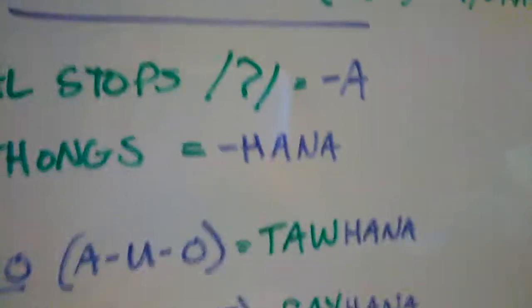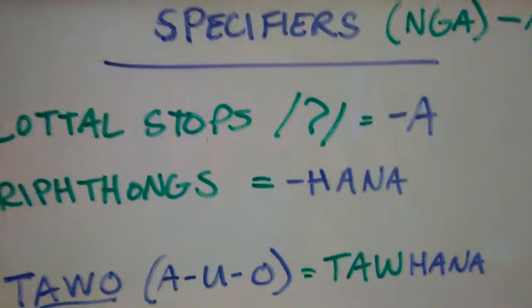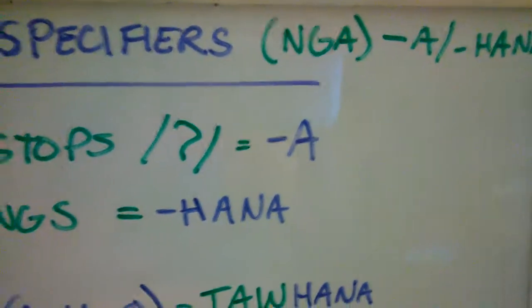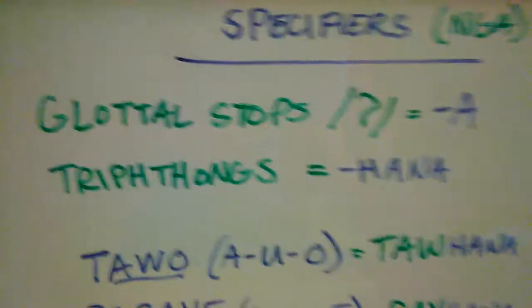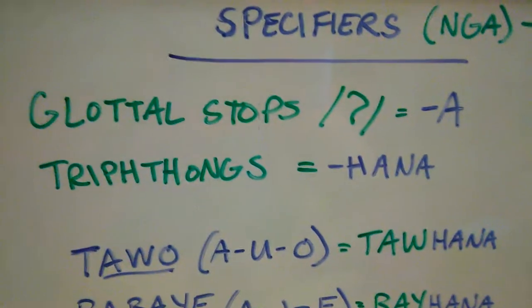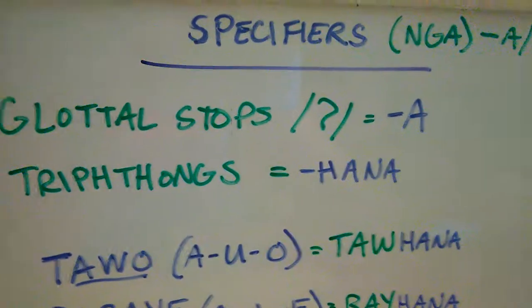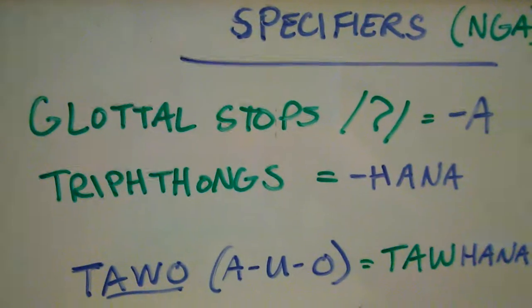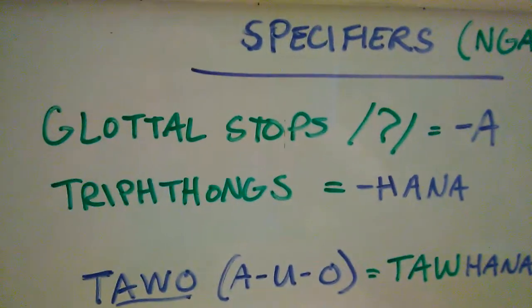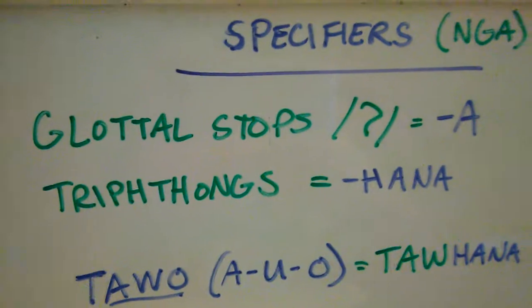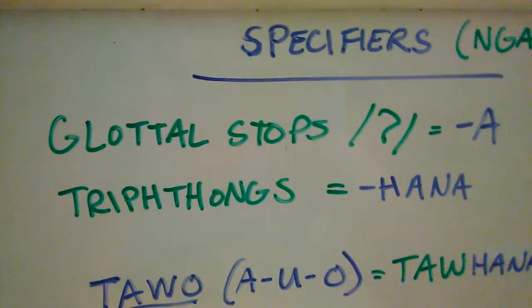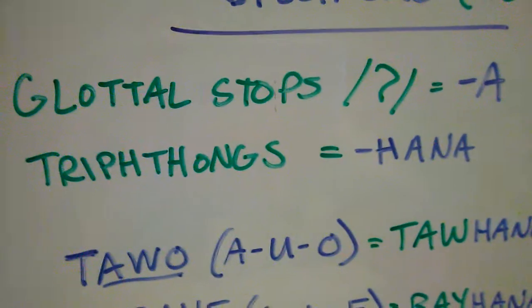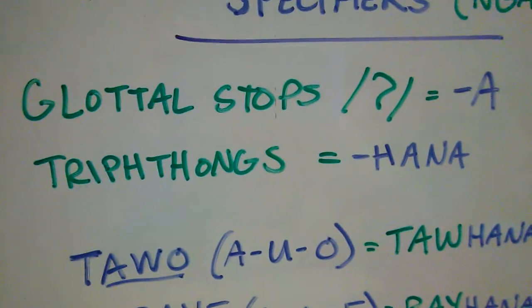This is a continuation of specifiers. We're going to look at two more cases of specifiers — not types, but cases. The first one is glottal stops: nouns that end in a glottal stop will have the 'a' ending. The second case is triphthongs: nouns that end in a triphthong will have the 'hana' ending. So glottal stops take 'a' and triphthongs take 'hana'.